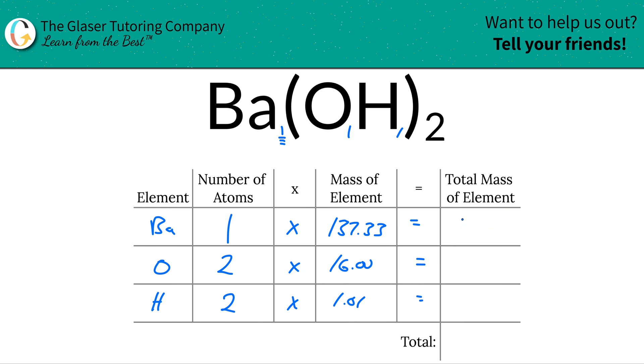So the total mass of barium in the compound is 137.33. The total mass of oxygen here is about 32. And then the total mass of hydrogen here is about 2.02.